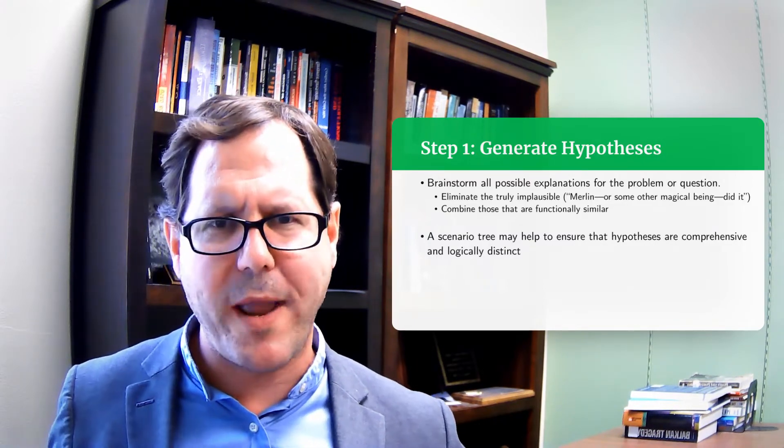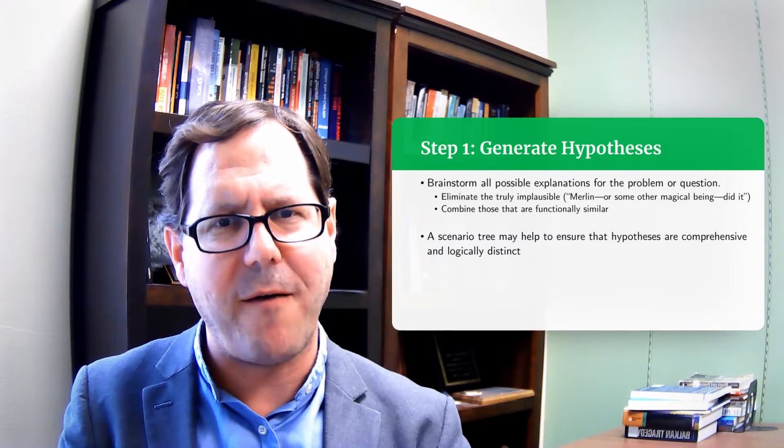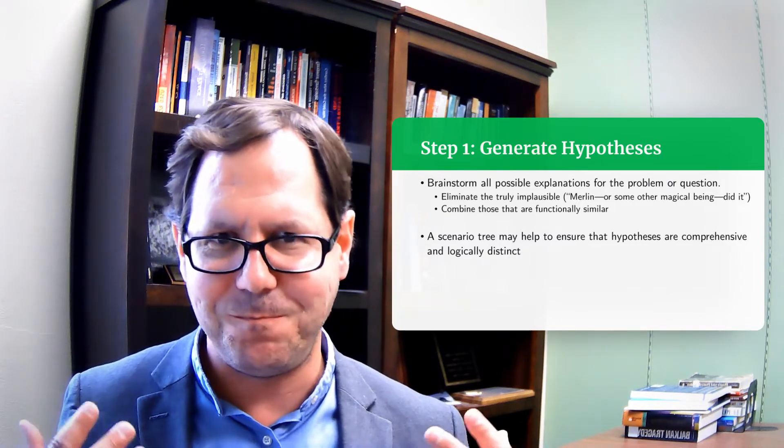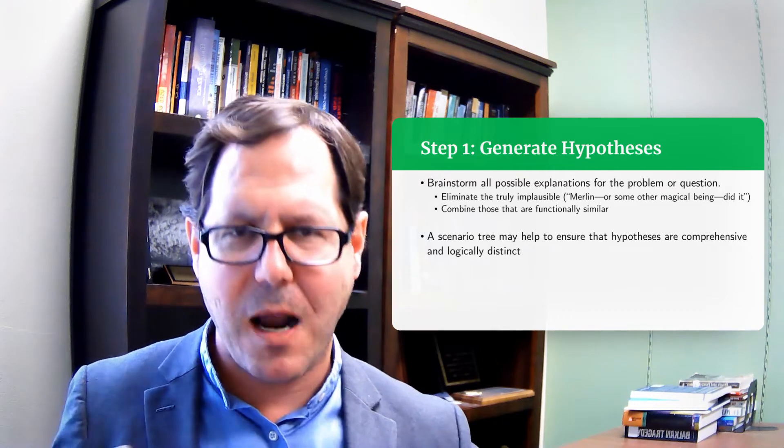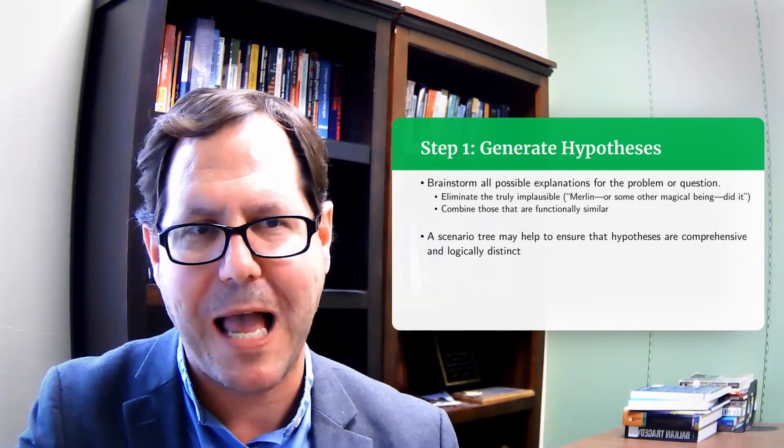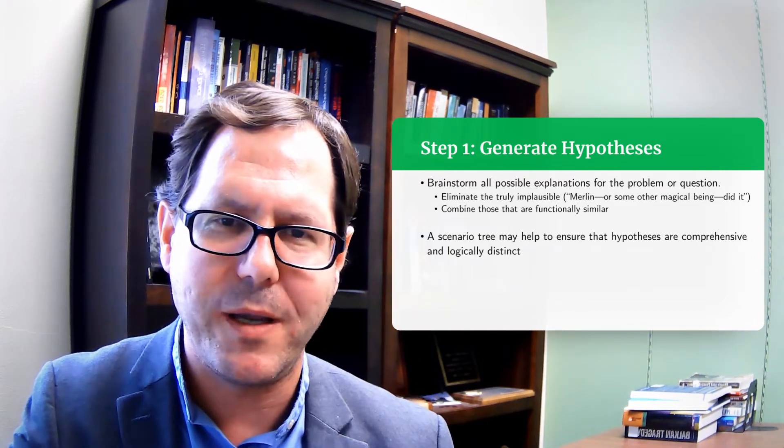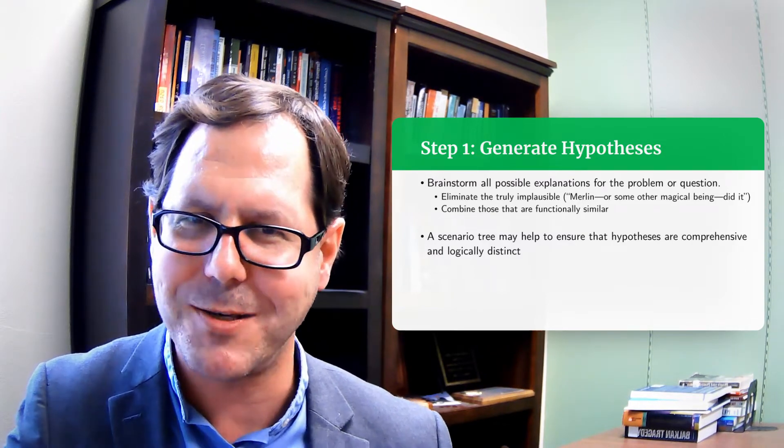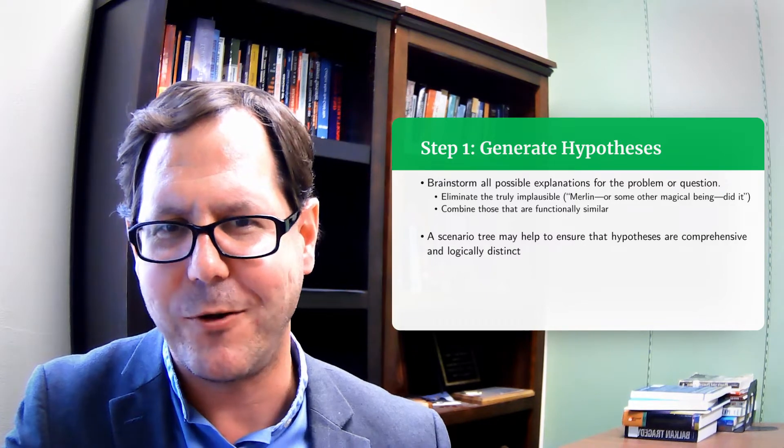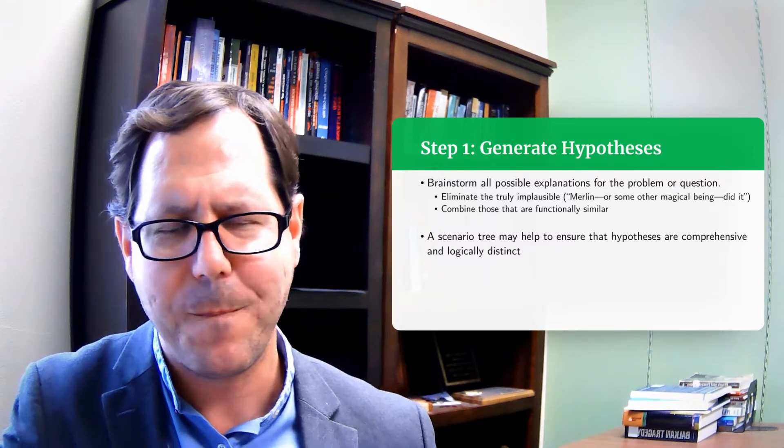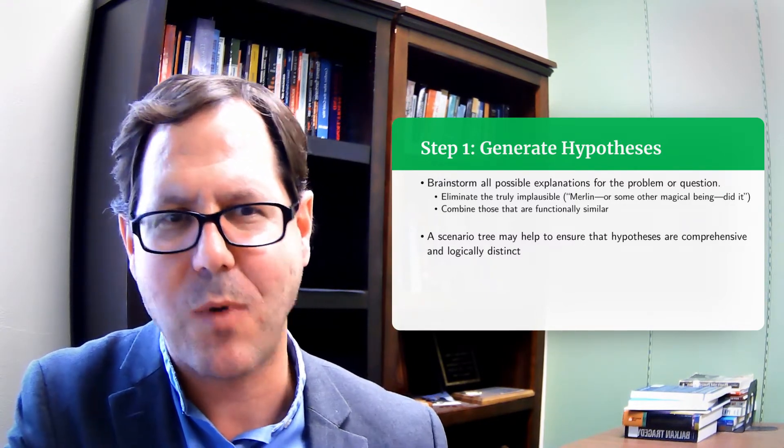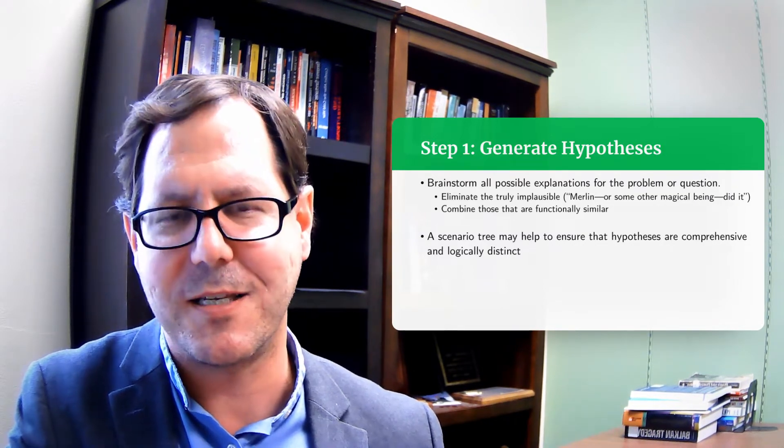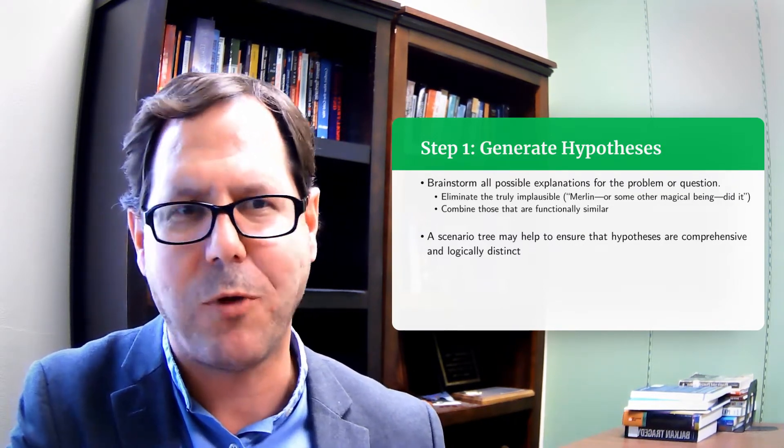So we could sketch those out. Maybe we sort of sketch out the full range. We say, well, these two are similar enough that we'll lump them together a bit. But we want to get precise, comprehensive hypotheses about what could be happening in a situation. I'll just flag that we tend to stick to the realm of what's possible. So we don't necessarily need to include Merlin is hiding the weapons of mass destruction. If Merlin is involved, your hypothesis is probably outside the realm of what's plausible.